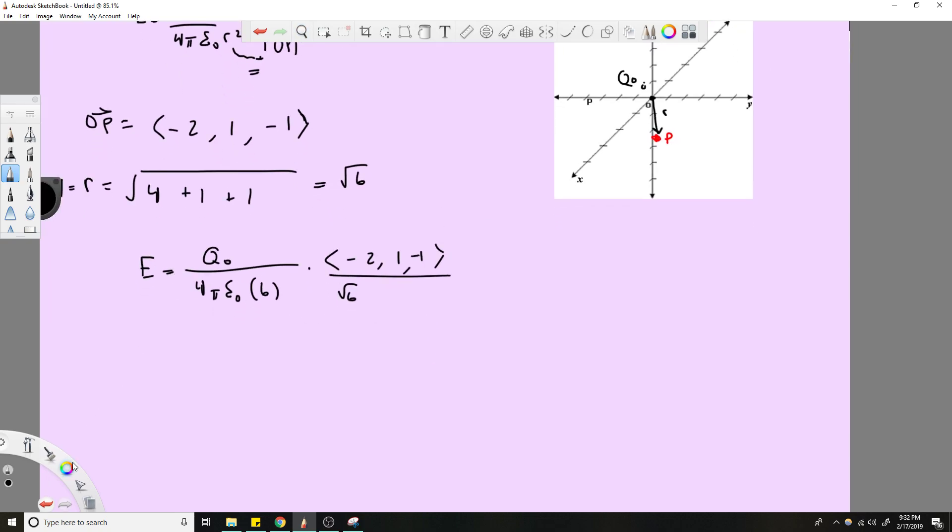Now, the problem here is that this is an E, and we don't know what our E is, but we know what our EZ is. So what we can do is kind of neglect these two, this X component and this Y component. So then from there we'll have EZ equals Q0 over 4 pi epsilon0 times 6 root of 6. So we're no longer in a vector equation. We're dealing with a scalar now.